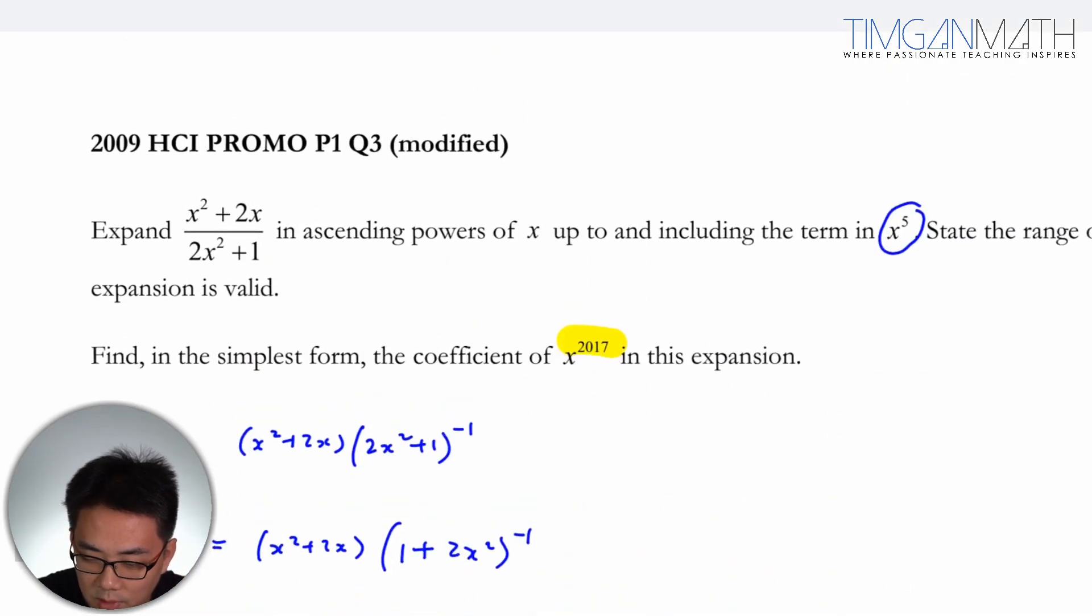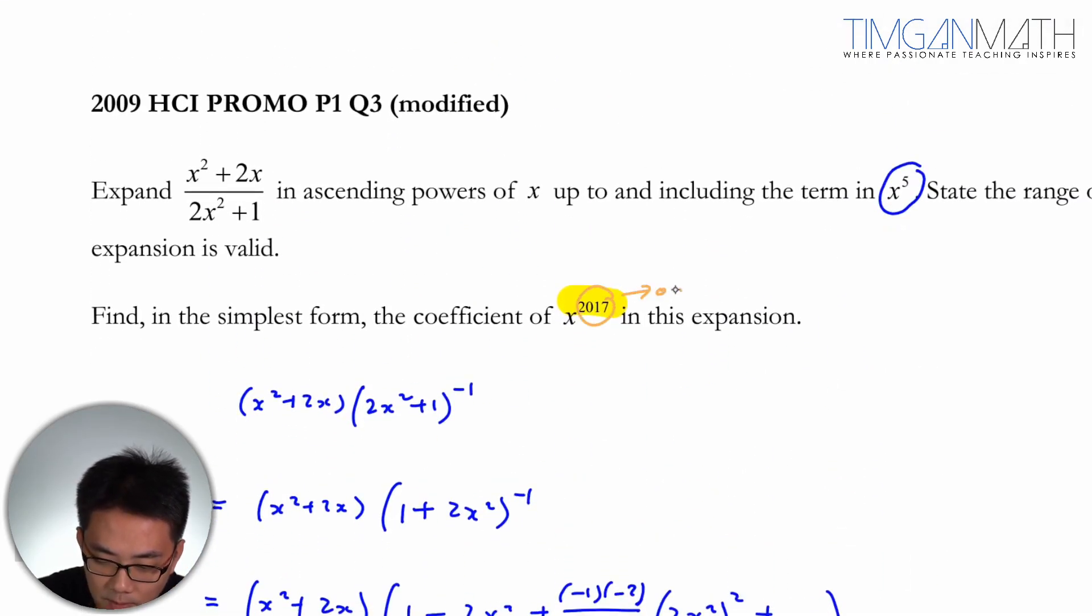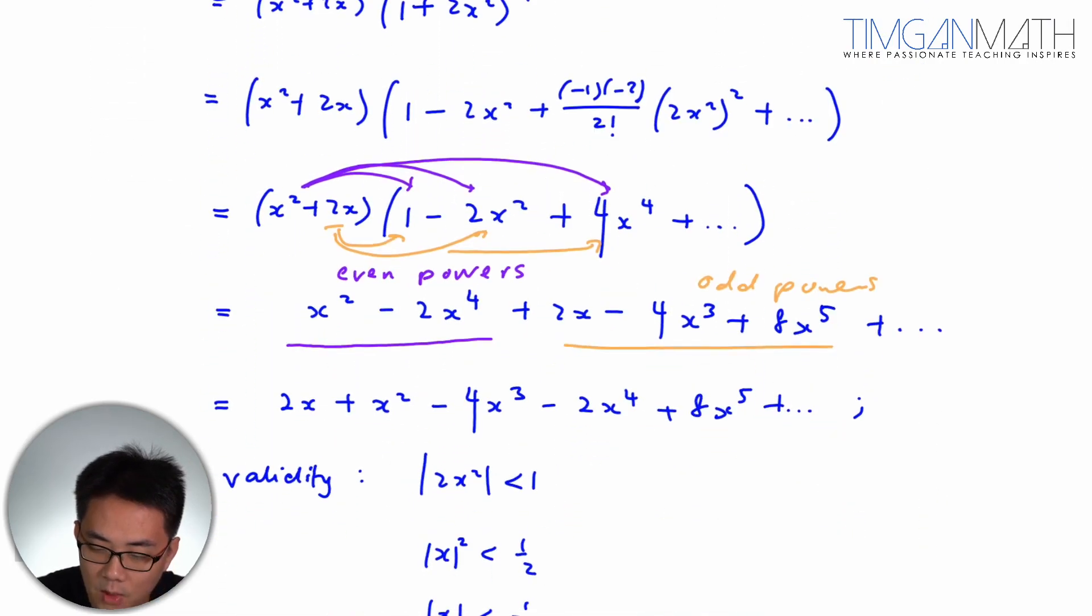So depending on the question, because now this is obviously odd, what I need now is essentially this multiplied with x^2016. That's the main thing.